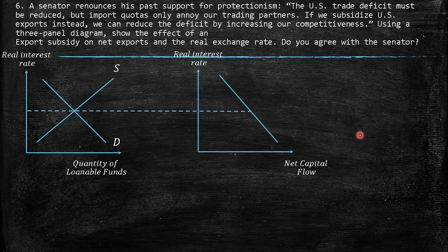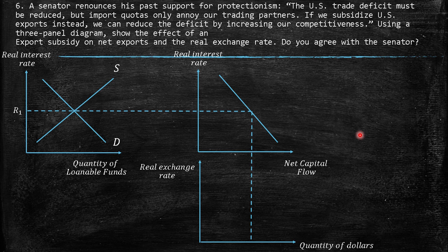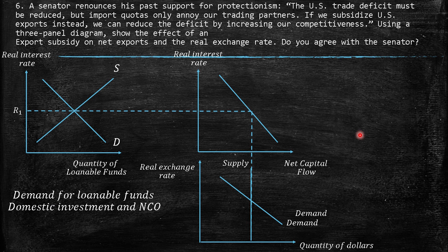When you have a higher interest rate, you incentivize foreign capitals to come to our country — in this case, the US. The real interest rate determines the net capital outflow, which is the supply of dollars. When we have more exports provided by the subsidy for exports, we have a shift to the right in the demand for dollars.